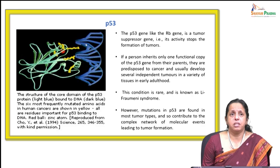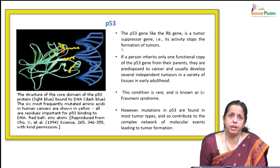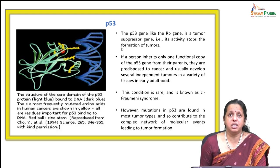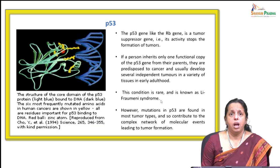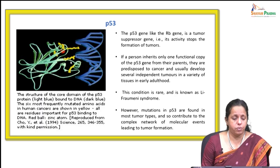P53 is a famous tumour suppressor gene. Like the retinoblastoma gene, its activity stops the formation of tumours. If a person inherits only one functional copy of the P53 gene from their parents, they could be predisposed to cancer and usually develop several independent tumours in a variety of tissues in early adulthood — a rare condition known as Li-Fraumeni syndrome. The structure of P53 shows its core domain in light blue bound to DNA in dark blue, with the most frequent mutations shown in yellow. This diagram depicts the overview of P53 activation, regulation, and transcriptional cellular processes.